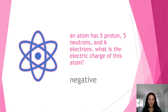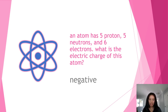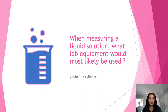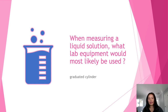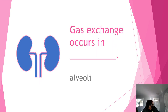An atom has five protons, five neutrons, and six electrons — what is the electric charge of this atom? The answer is negative, because when electrons outnumber protons, the charge is negative. When measuring a liquid solution, the lab equipment most likely used is a graduated cylinder, not a triple beam balance.